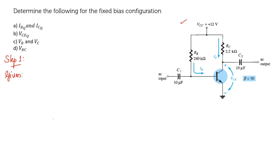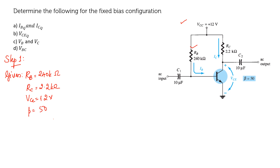The values given in the problem are: RB is equal to 240 kilo ohm, RC is equal to 2.2 kilo ohm, VCC is equal to 12 volt, and beta is equal to 50.